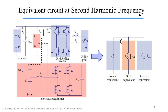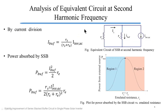Let us find out the equivalent circuit at second harmonic frequency. The equivalent of the DC source at second harmonic frequency is the source resistance RS. The equivalent of the SSB circuit at second harmonic frequency is the emulated resistance RE. The equivalent of the grid feeding inverter is the second harmonic current source I_inverter. Further analysis tells us that the second harmonic current through the SSB circuit is given by I_buff = RS/(RS + RE) × I_inverter_AC by current division rule. Also, the power absorbed by the SSB circuit from the external network is given by a formula. By substituting the expression for I_buff we get this formula, and we can plot P_buff versus RE to get a bell shaped curve.